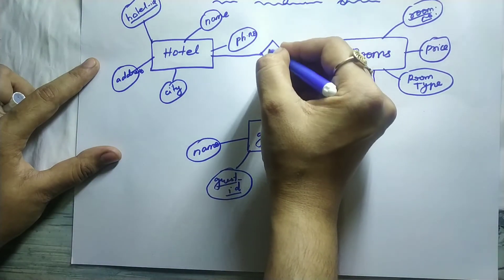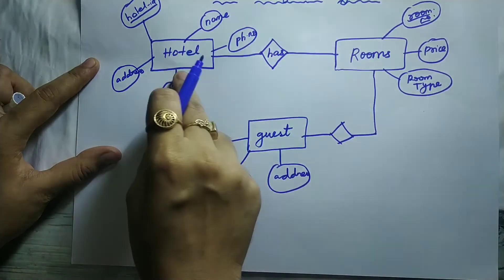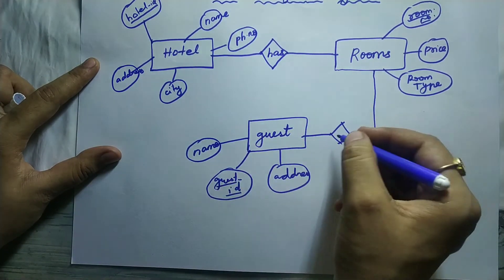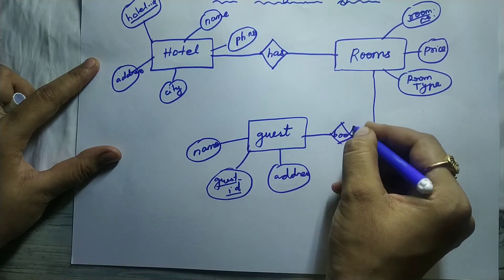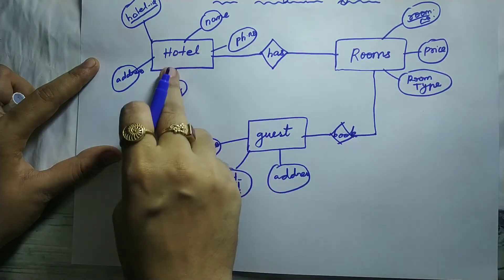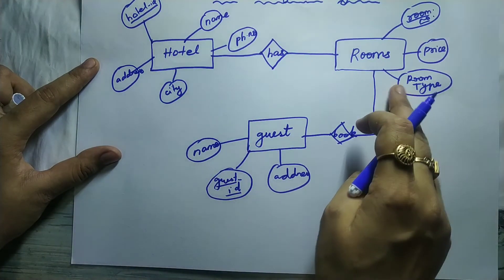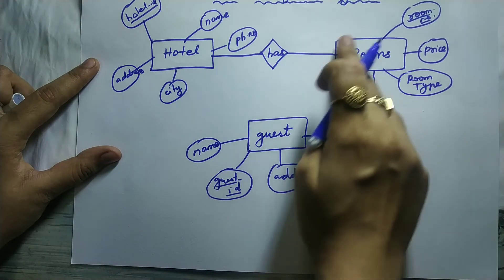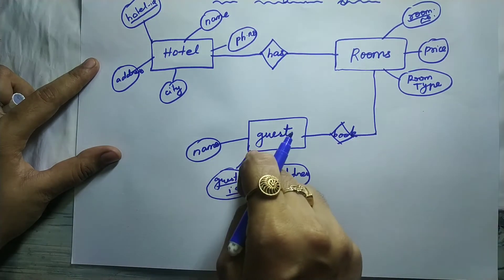So hotel, inside this I will write has. Hotel has rooms. And then guest will book room, so guest books room. Hotel has room. So the flow is hotel has rooms, and those rooms will be booked by the guest.